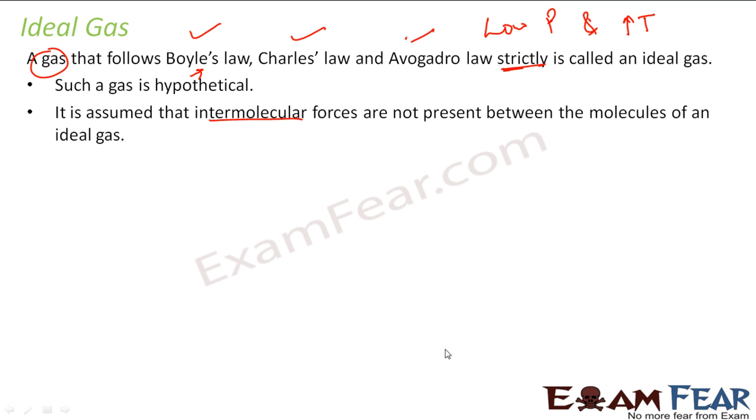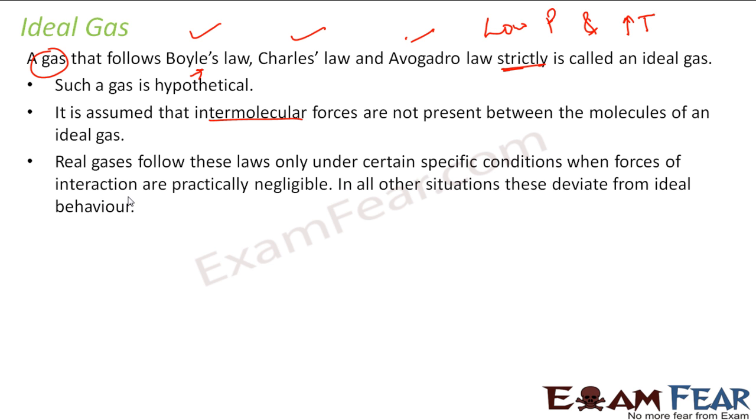Why? Because at low pressure and high temperature, the intermolecular force is very minor. And that's why real gas follows these laws as ideal gas law only in specific conditions where the force is practically negligible. When the intermolecular force is very less, real gases like oxygen, hydrogen, nitrogen behave like ideal gas. In other scenarios, they deviate from ideal gas behavior.